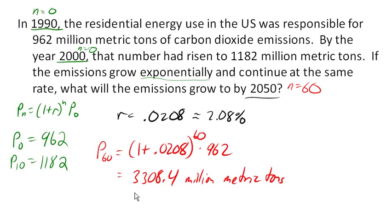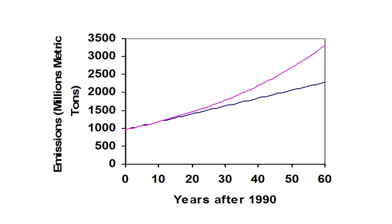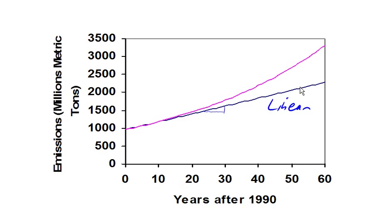It might help to look at a graph to see what's going on here. The darker line is our linear growth model. A linear growth model grows like a line — it always increases by the same amount. So if one year goes by, the amount it increases is always the same.